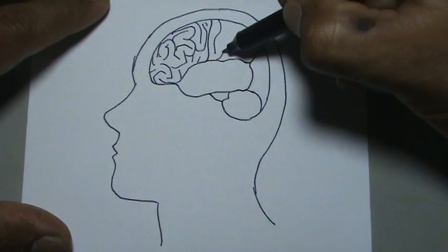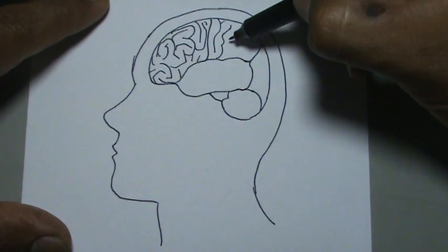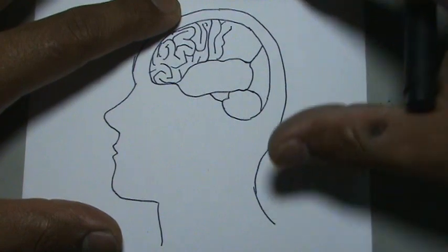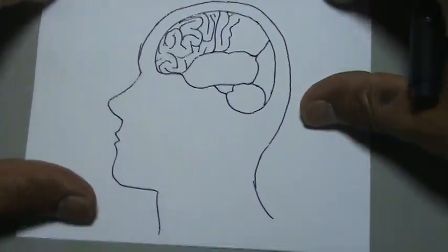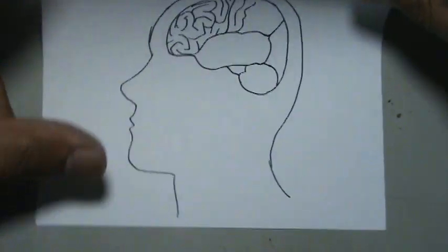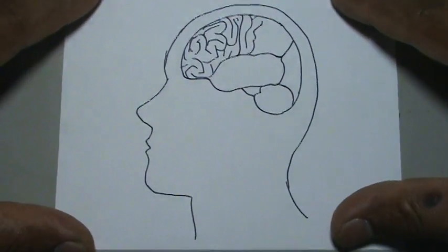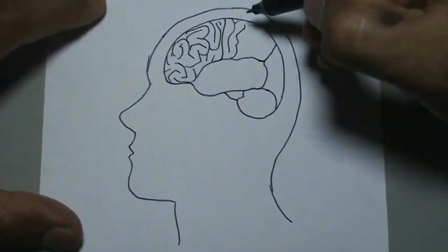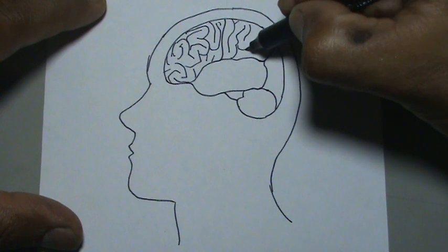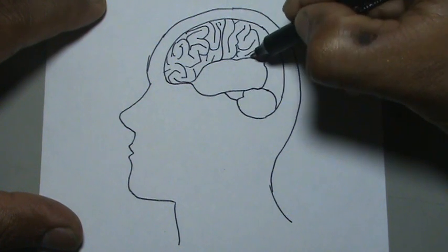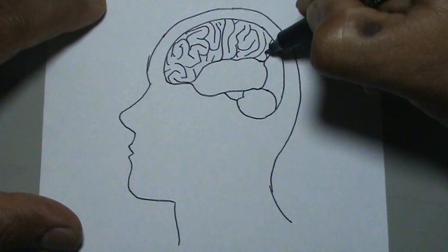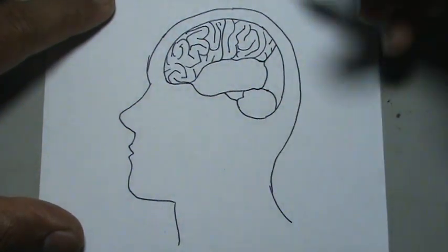Hacemos rayitas, unas que suben, otras bajan, vamos llenando cada sección. Quitemos este papel de abajo, un poquito más cómodo. Seguimos llenando, hacemos estas figuras así para ir llenando cada sección de nuestro cerebro.